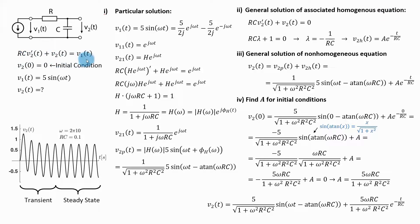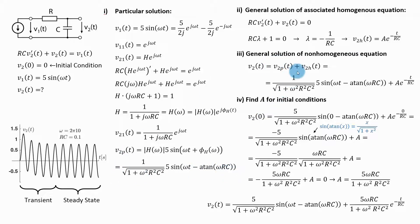The characteristic equation of the homogeneous differential equation has this root, and the general solution is this. Step three: the general solution of the non-homogeneous equation is the particular solution plus the general solution of the associated homogeneous equation. Step four: I find constant A to fit the initial condition. I substitute time zero into the general solution and get an expression, which after simplification — using the formula that sine of arctangent equals a certain value — reduces further. Since per the initial condition this must equal zero, I can solve for constant A.